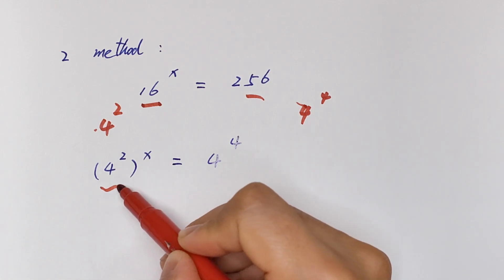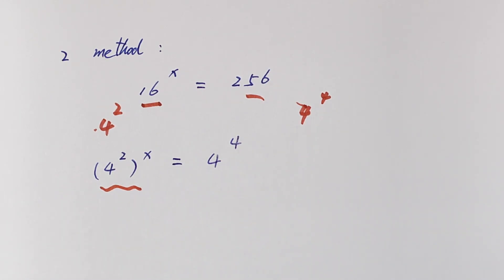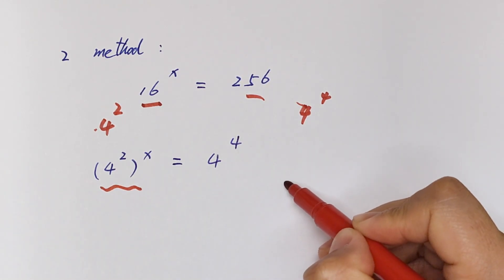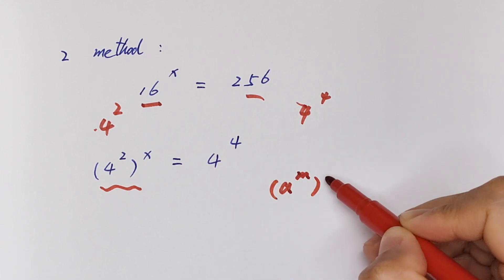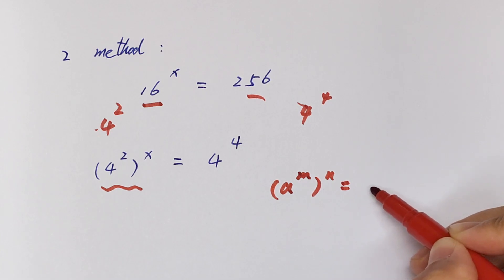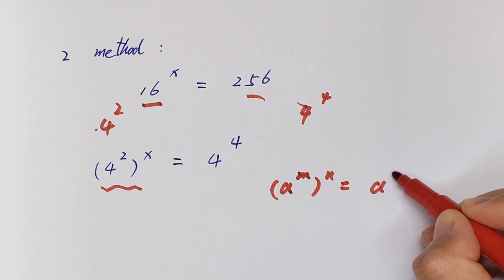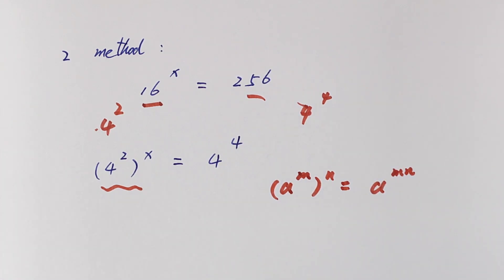Now from here we will apply the exponential rule that A to the power M in brackets to the power N is equal to A to the power M times N. So here in our equation it will be 4 to the power 2x is equal to 4 to the power 4.